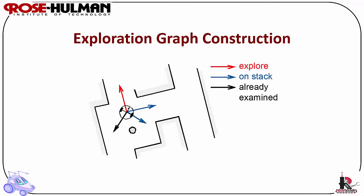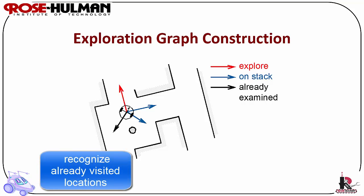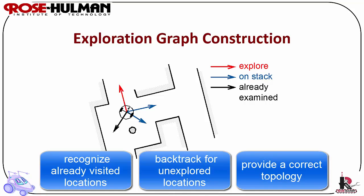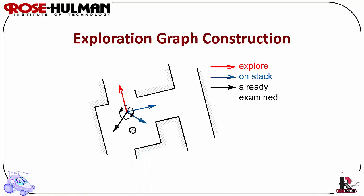Exploration graph construction consists of recognizing already visited locations in the world, backtracking for unexplored openings, and when finished, providing a correct topology of the world. Automatic map making involves the robot learning the environment based upon a coded algorithm. This must be done effectively despite having a dynamically changing and unpredictable world and different perceptions of the space. It requires incorporating newly sensed information into the existing world model.